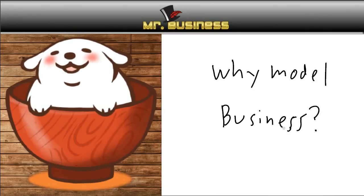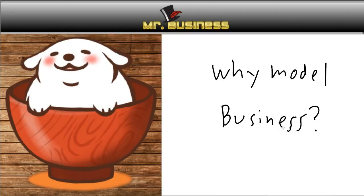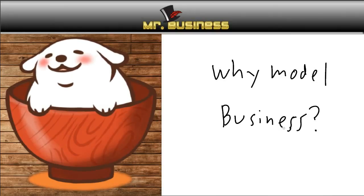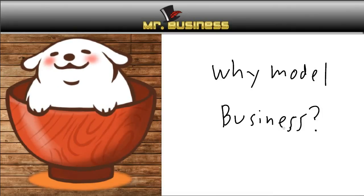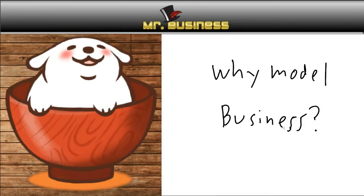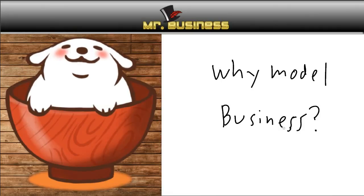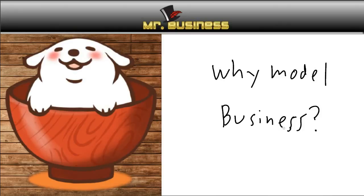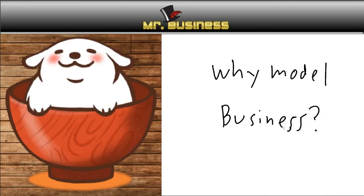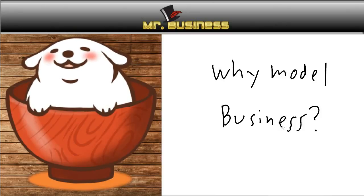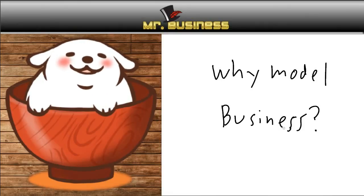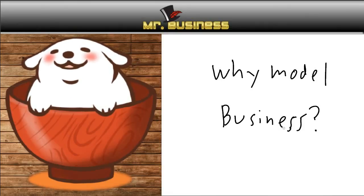A model in most cases is just a graphic representation of what something is. There are also people that walk on runways that we consider models. A model is also how something could or should work. So sometimes when businesses get off track, they look back and say, why is our business not working anymore? A lot of times it's because they strayed from their business model — they look at what their business used to be, why it worked, and how to get back to that.